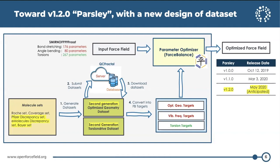To build these datasets, we added three more molecule sets to the generation procedure. Along with the Roche set and coverage set used before, we added the Pfizer discrepancy set, which contains 100 challenging molecules whose DFT optimized geometries were significantly different with OPLS3. We also added the eMolecules discrepancy set, whose geometries were significantly different in SMIRNOFF99Frosst relative to other force fields, and the Bayer set. Using these five input molecule sets, we generated second generation datasets to cover more diverse chemical diversity and better coverage of parameters.